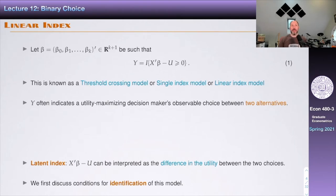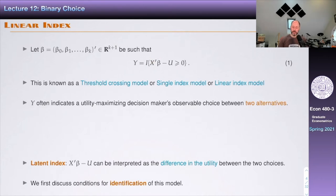The linear index structure looks like this: Y equals one if X prime beta minus U is greater than or equal to zero. This is called a threshold crossing model — the index crosses zero or not. It's also called a single index or linear index model. Y often indicates a utility-maximizing decision maker's observable choice between two alternatives.